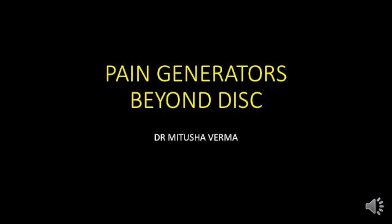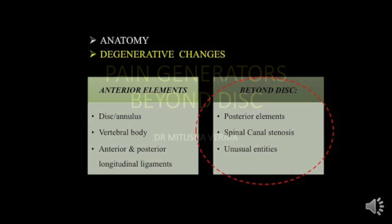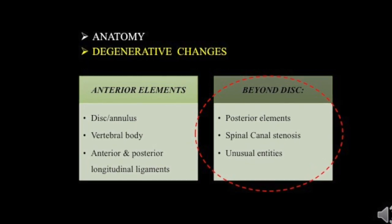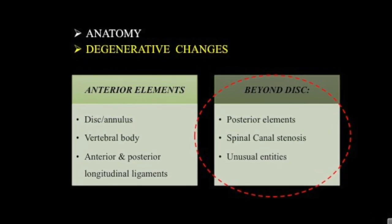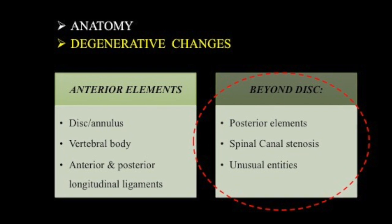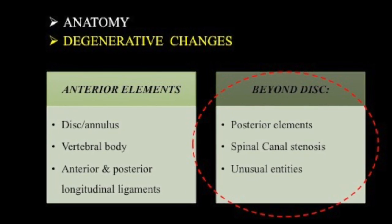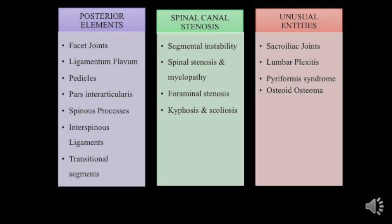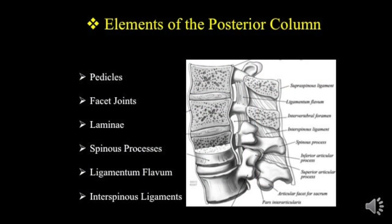In this segment we are going to discuss imaging in one of the most commonly seen problems — backache. We are going to discuss pain generators beyond the disc. Backache can be due to the anterior elements or the posterior elements, and a few other segments like spinal canal stenosis or unusual entities. We can revise the various components in the posterior element section: the pedicle, facet joints, lamina, spinous process, ligamentum flavum, and the interspinous ligaments.